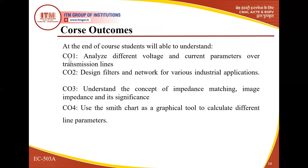The overall course outcomes: analyze different voltage and current parameters over the transmission line. There are different types of parameters, divided into primary and secondary constants. With the help of the different concepts in CNTL, we are in a position to calculate different parameters — an important considerable factor during the designing of transmission lines, filters, and networks for various industry applications. Students also understand the concept of impedance matching, image impedance and its significance, and use the Smith chart as a graphical method to calculate parameters used in the designing process.